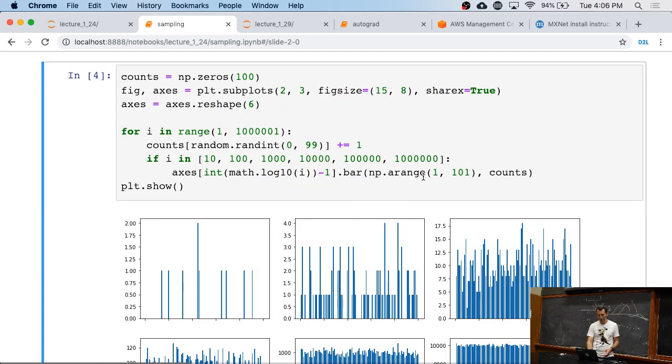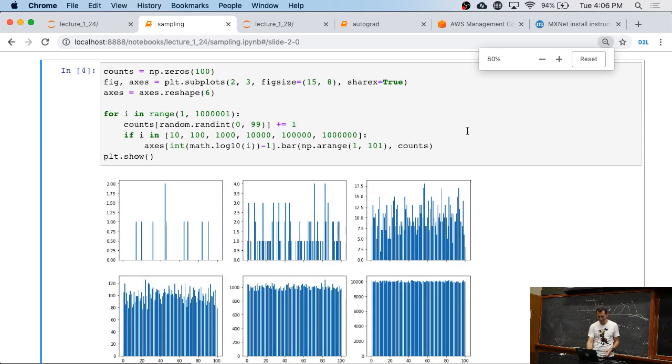This is the picture that we saw before, but now actually implemented. Okay, let's explain what's going on. So, I'm just picking 100 bins. I'm doing some plotting remangling. And I'm going to generate random integers between zero and 99.